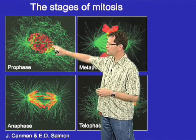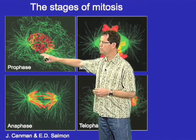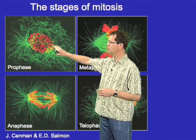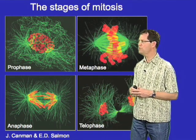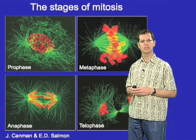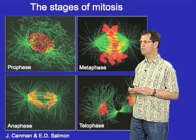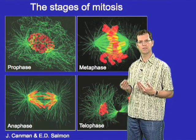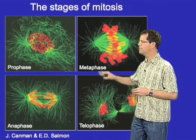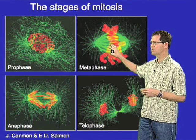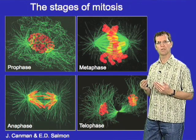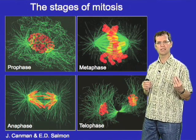Prophase is also typified by changes in the organization of the microtubule cytoskeleton, labeled here in green. In prophase there are two microtubule organizing centers that move apart from one another along the surface of the nucleus to begin formation of a mitotic spindle. At the end of prophase the nuclear envelope dissolves, allowing microtubules to gain access to the sister chromatid pairs inside the nucleus, until the cell reaches metaphase when those sister chromatid pairs are attached to the mitotic spindle in a bi-oriented fashion.